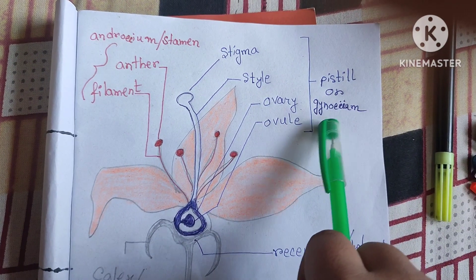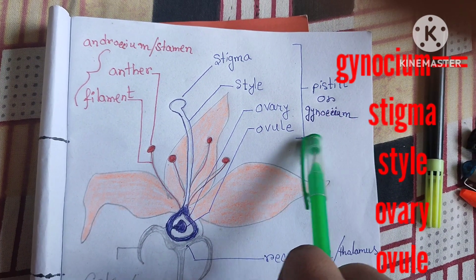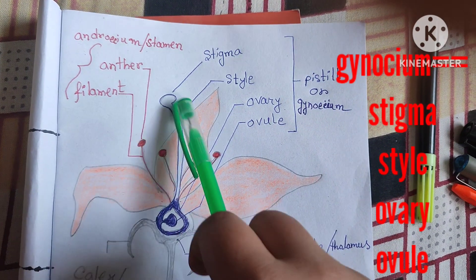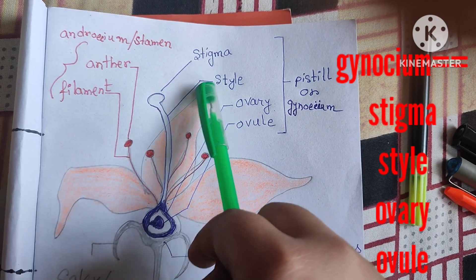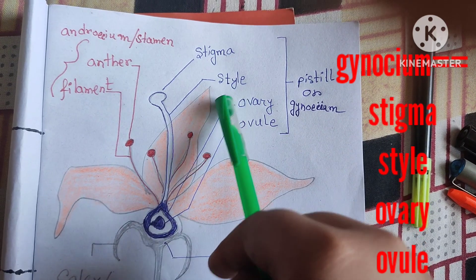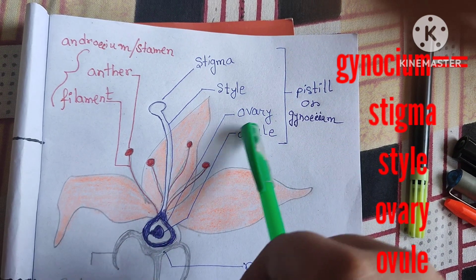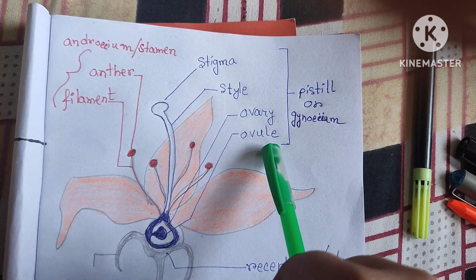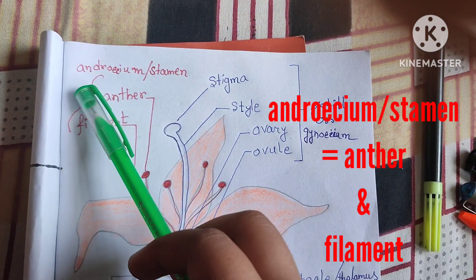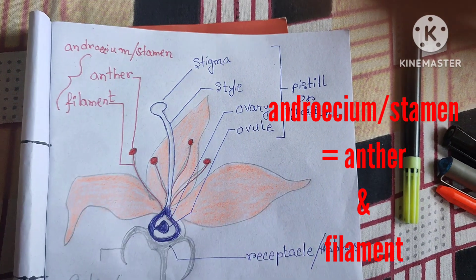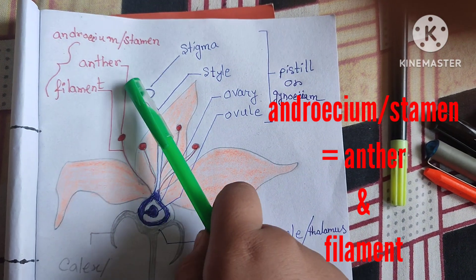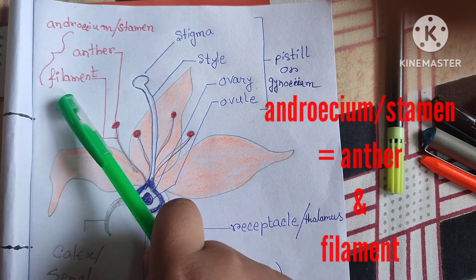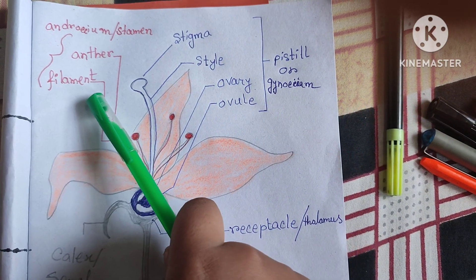Pistil or Gynoecium consists of four parts. They are Stigma, Style, Ovary, and Ovules. Androecium or Stamen consists of only two parts which are Anther and Filament.